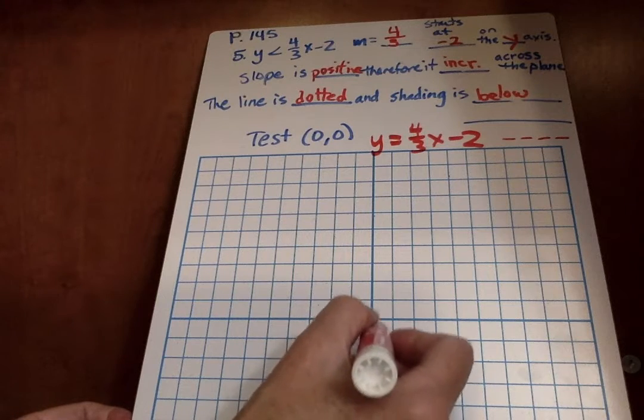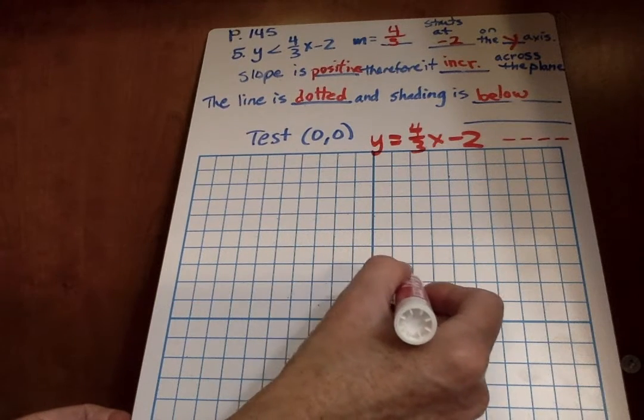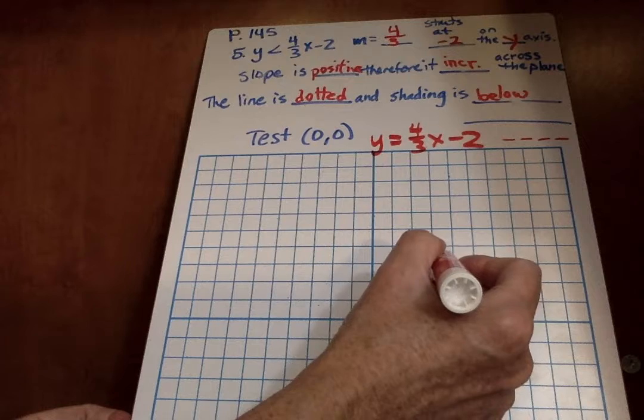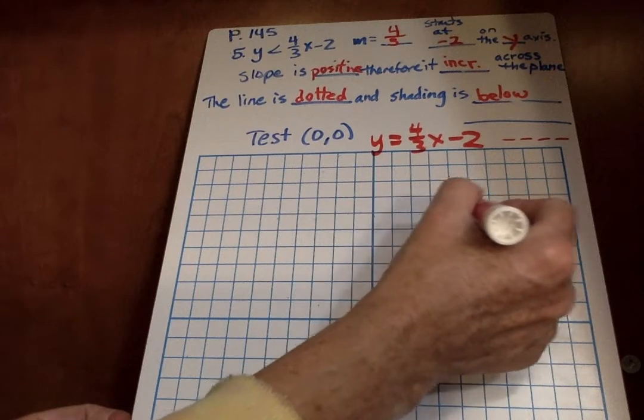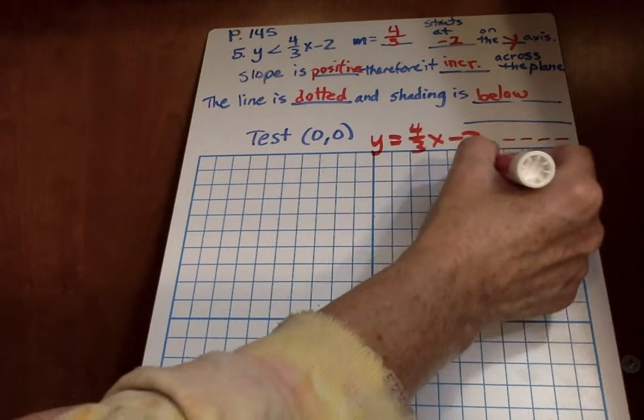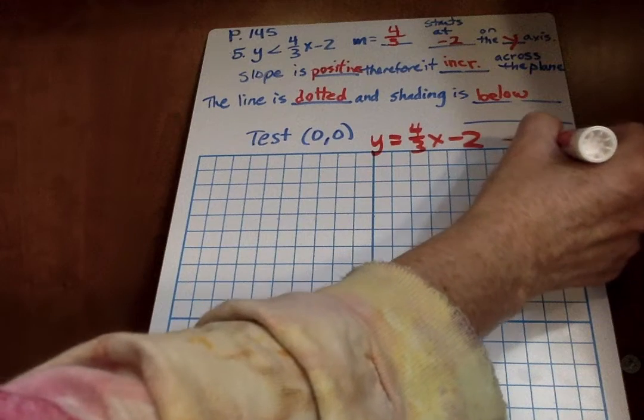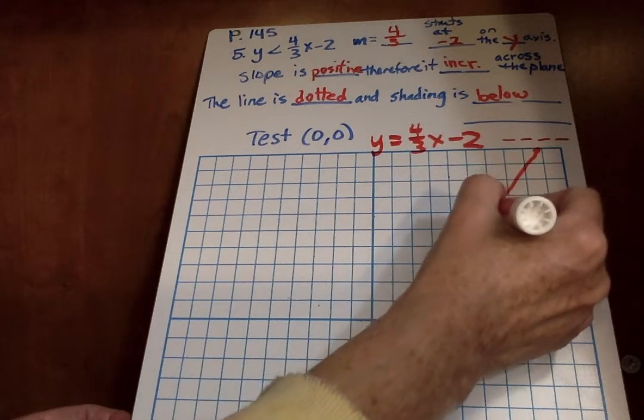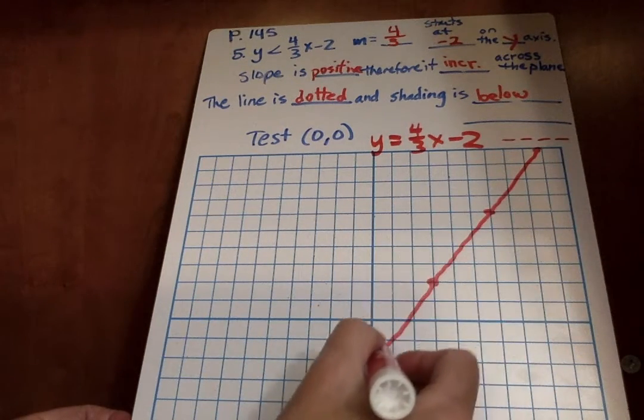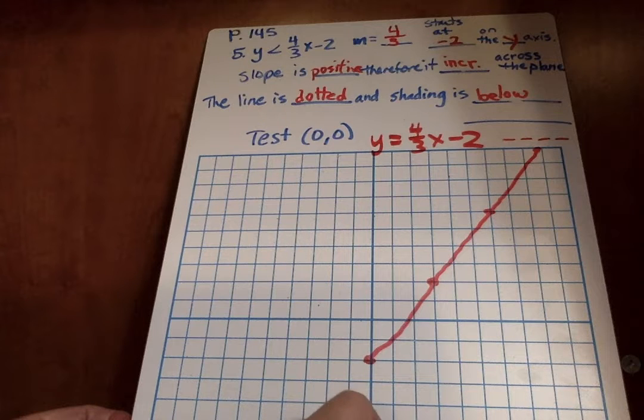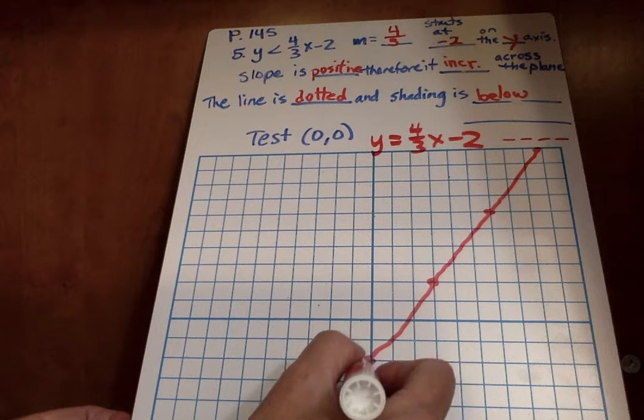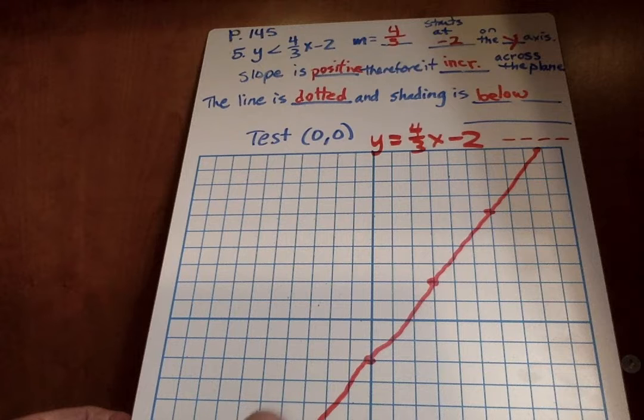So right here, it goes up 1, 2, 3, 4 over 1, 2, 3. And that's a positive slope. 1, 2, 3, 4, 1, 2, 3, 1, 2, 3, 4, 1, 2, 3. So we want to connect all of this up. 1, 2, 3, 2, 3. Some of you might make this mistake that I just made. And what was it?